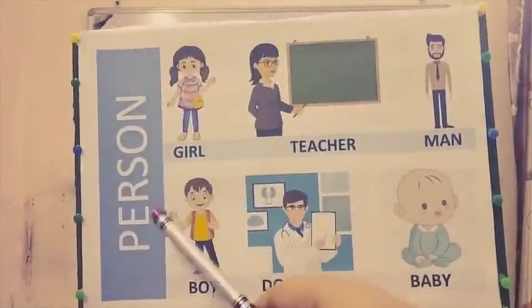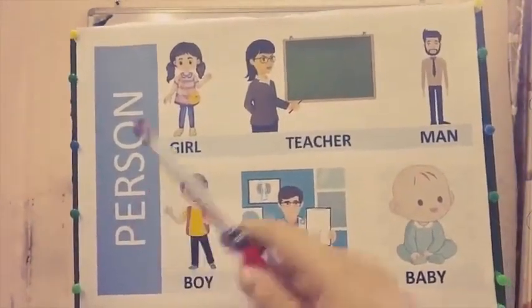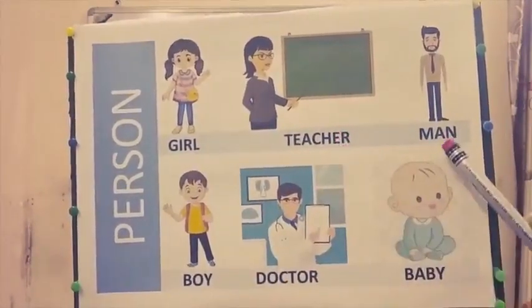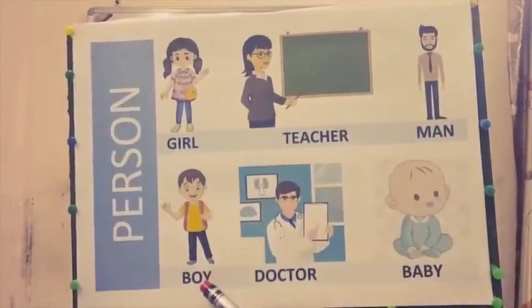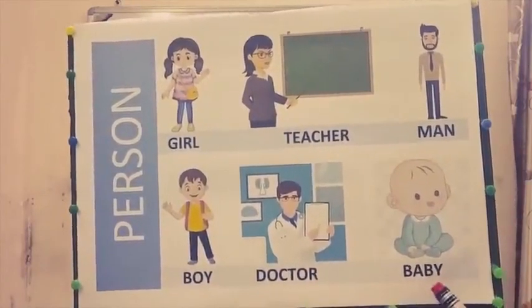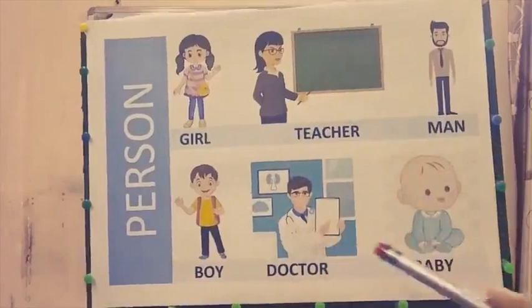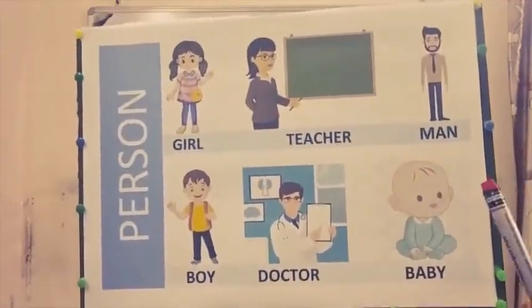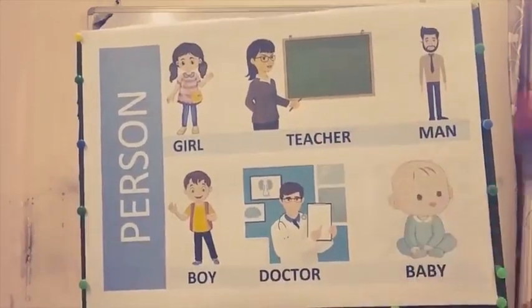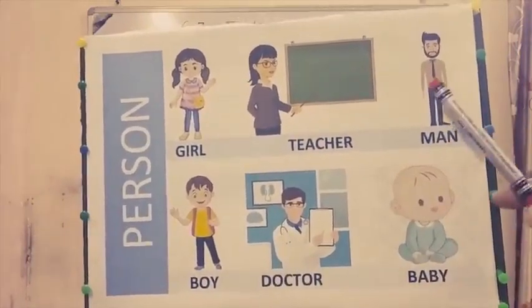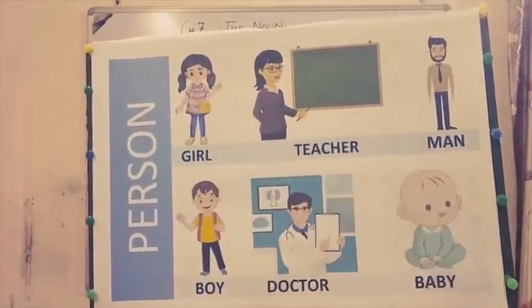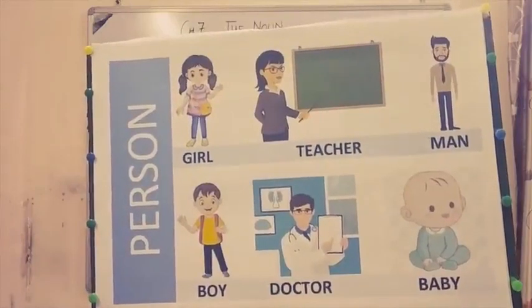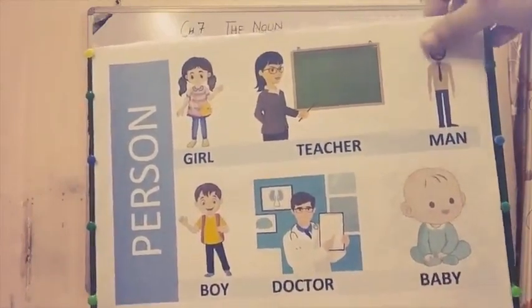This is the first category of a noun: person. Girl, teacher, man, boy, doctor, baby — these are all common nouns. But if we know their names properly, like teacher Anu, man Ram, girl Seetha, doctor Mr. Ramesh — these are called proper nouns.